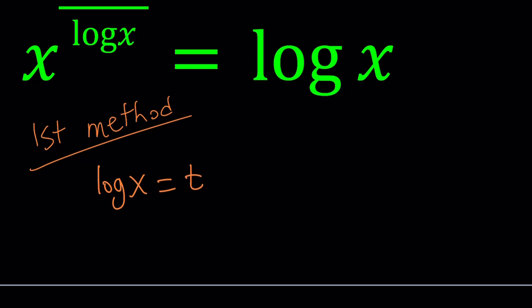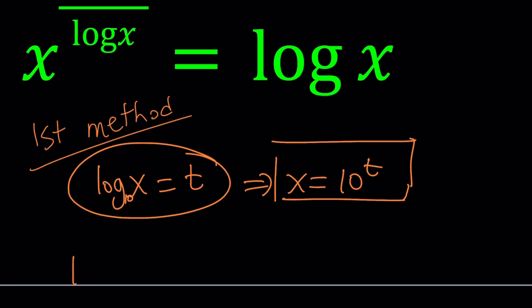This implies because the base is 10, when the base is not written, by using definition x becomes 10 to the power t. Remember, there's a 10 here, which is not written normally, where it's base 10, because we use the decimal system. So, if you replace x with 10 to the power t and log x with t everywhere, this is what you're going to get. 10 to the power t to the power 1 over log x, which is 1 over t, equals log x, which is t.